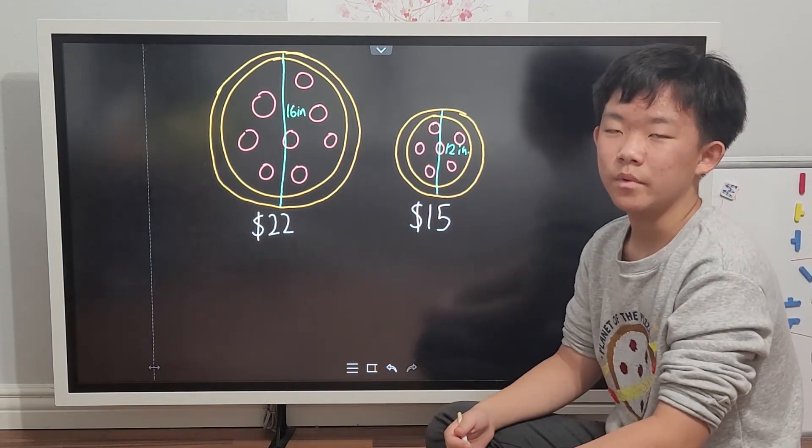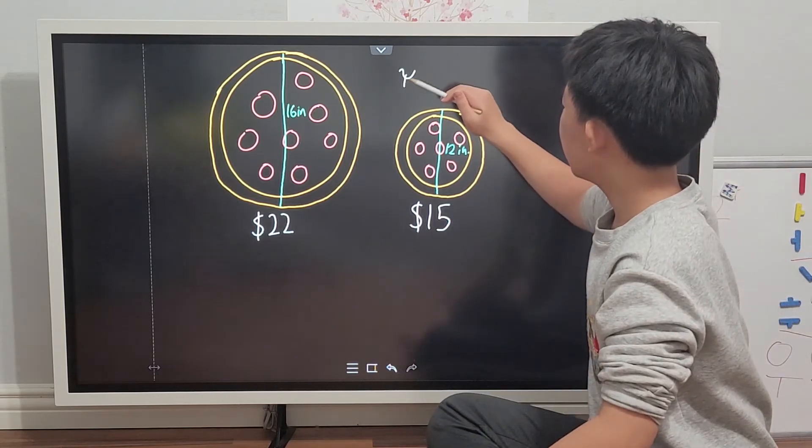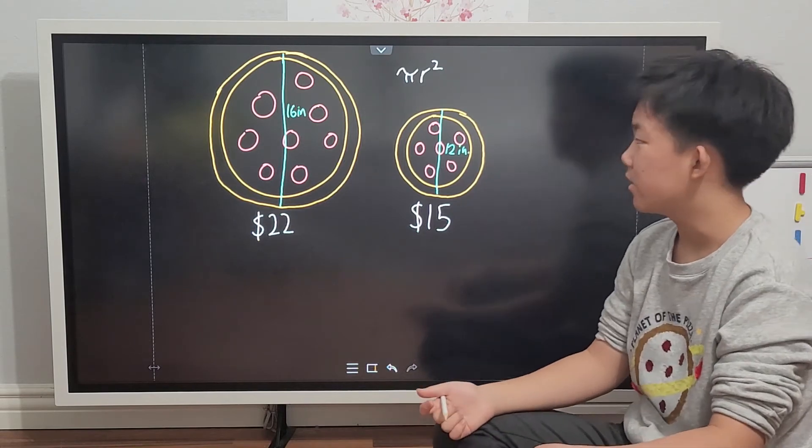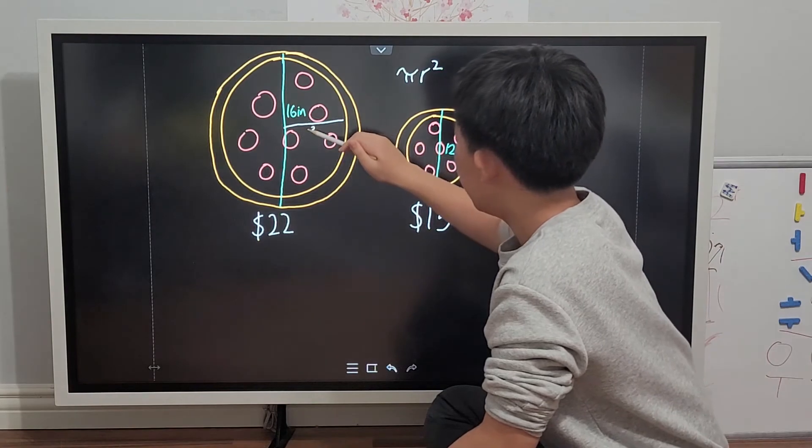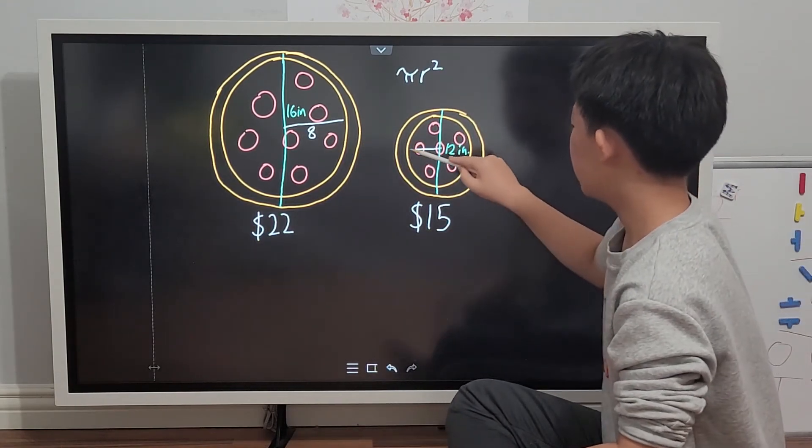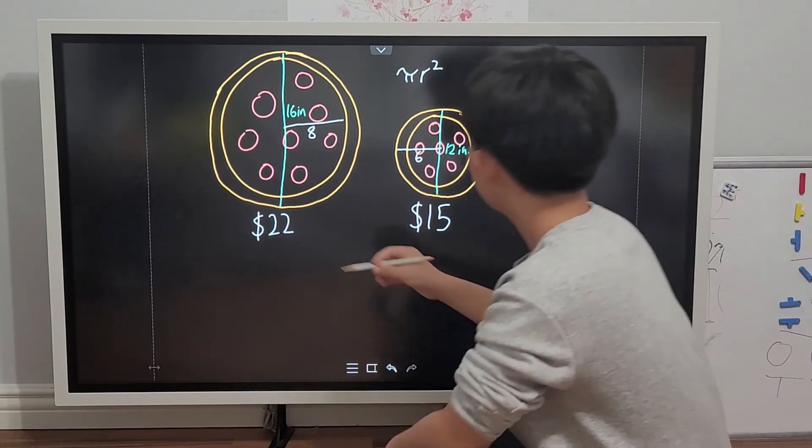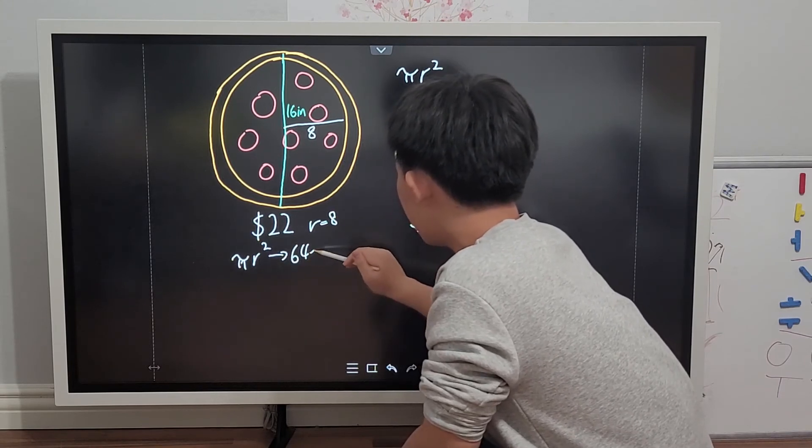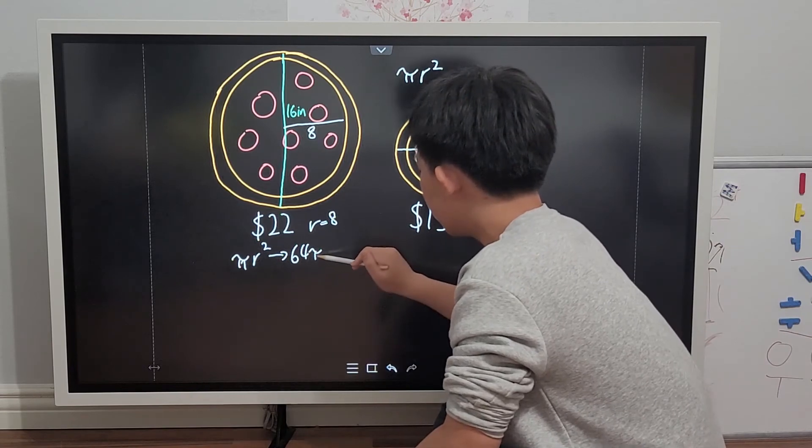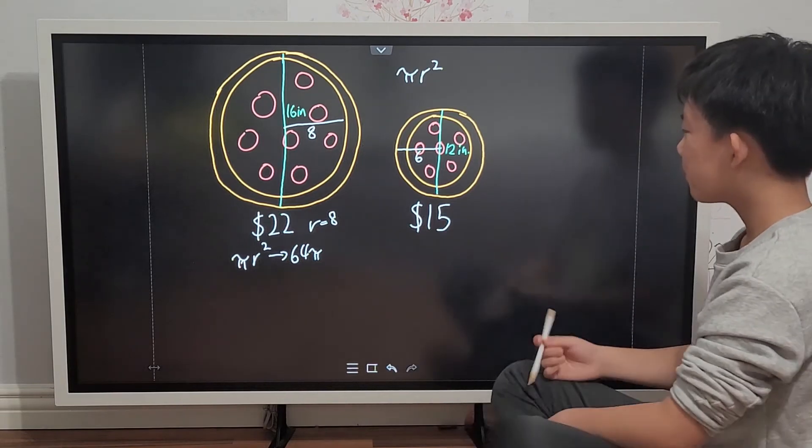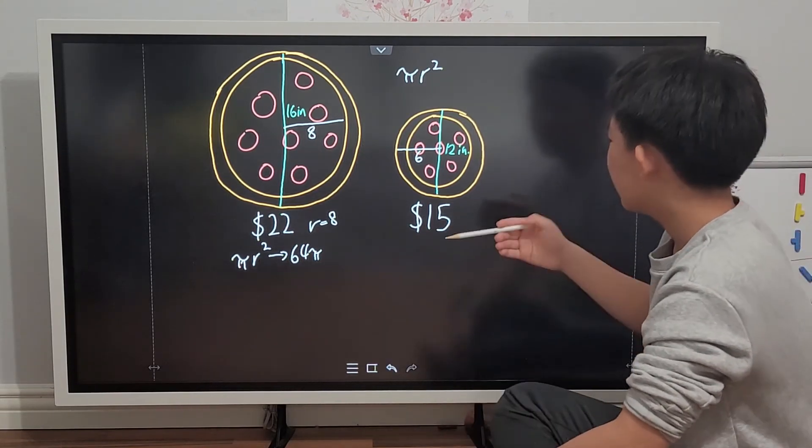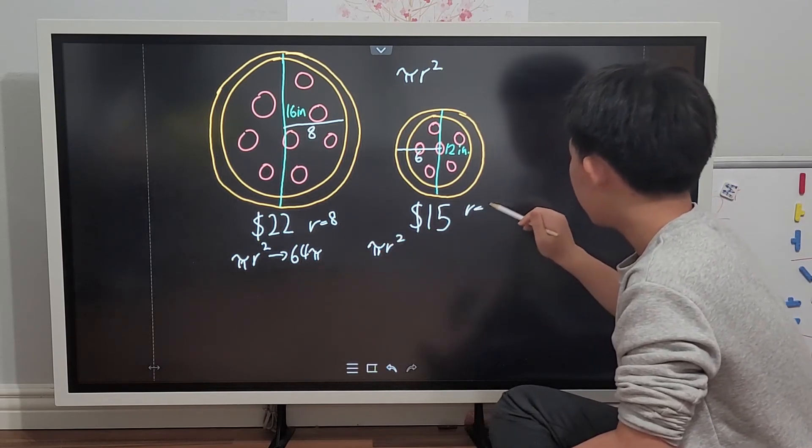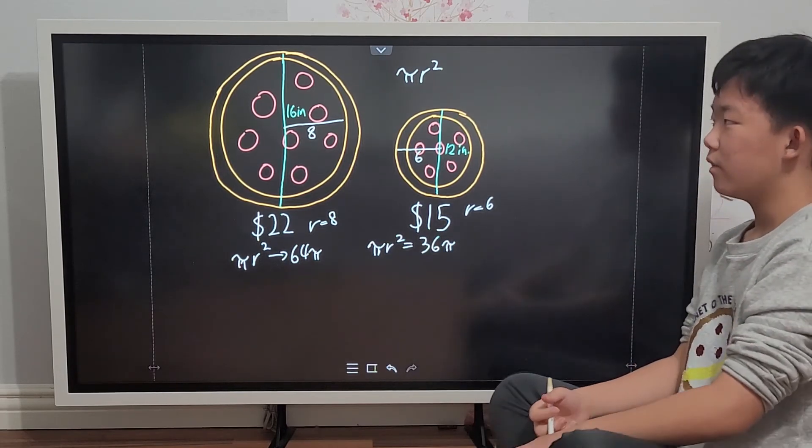Well, we're not going to need the circumference formula, but we will need the area formula, πr². Because diameter is 2 times the radius, the radius of this will be equal to 8 inches, and the radius of this will be equal to 6. So let's plug it into our equation. πr², where r equals 8. This will give us 64π. Let's also plug it into the formula. πr². If r equals 6, then we will have 36π square inches.